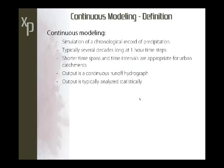We should start with the definition of continuous modeling — I'm really talking about the simulation of a chronological record of precipitation, a long time series of rain. For example, it might be several decades long at an hourly time step. For urban catchments with a fast response time, you would want a much smaller time step, maybe 5 or 15 minutes. A continuous simulation could be anything that's just longer than an event; stringing two events together is really a continuous simulation.